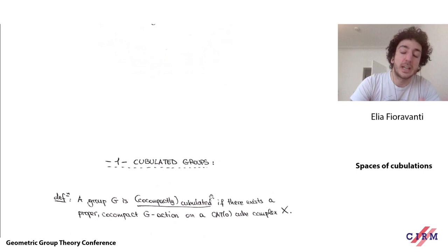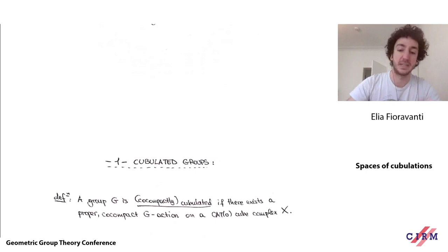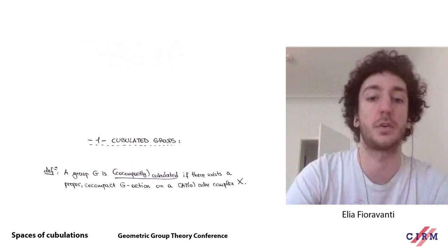I should really talk about co-compactly cubulated groups because I think that's what has become standard terminology, but I'm just going to say cubulated throughout the talk for simplicity. And similarly, a cubulation is going to be any such proper and co-compact action on some CAT(0) cube complex of our fixed group G.